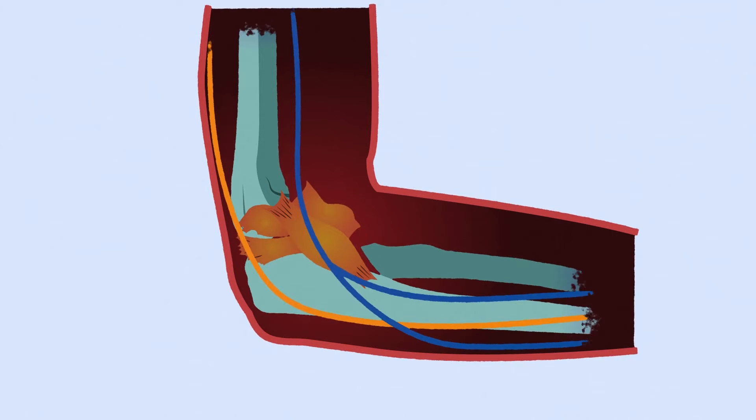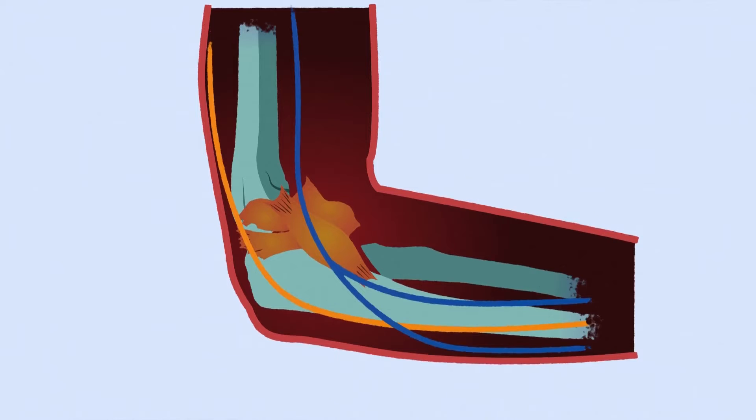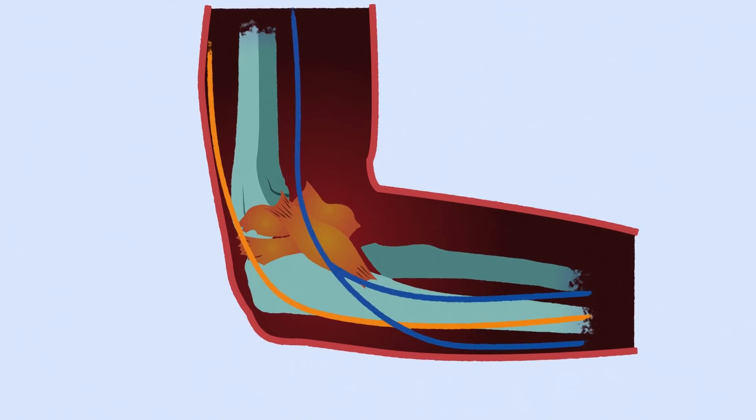The ulnar nerve is protected by fat, muscle, and bone, but there's a spot that it's exposed in your elbow. When your elbow is bent and the nerve is protected by only a small layer of skin, when hit, it's sure to make you cry.